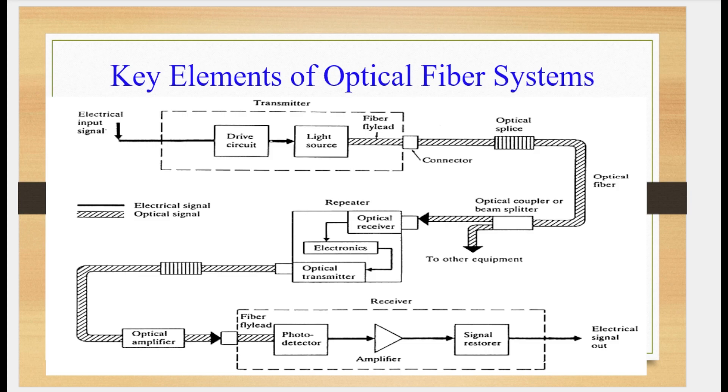In optical transmitter, fiber fly lead plays a very important role. Fiber fly lead is used to connect optical signal to optical fiber. Optical transmitter consists of a driver circuitry, light source, fiber fly lead and modulator. Driver circuitry drives the light source. Light source converts electrical signal to optical signal. Fiber fly lead is used to connect optical signal to optical fiber cable and modulator is used to modulate the signal into the light source.